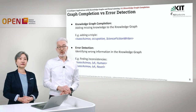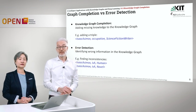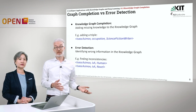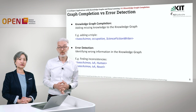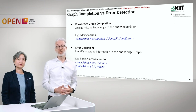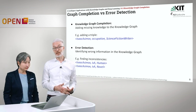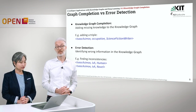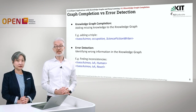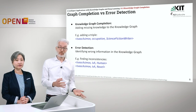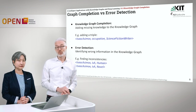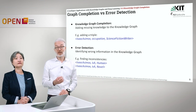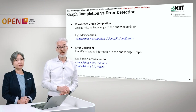We focus on knowledge graph completion. How does this differ from error detection? Knowledge graph completion is about adding missing knowledge to the knowledge graph — for example, adding an entire triple such as Isaac Asimov's occupation being science fiction writer. Error detection, on the other hand, is about identifying wrong information in the knowledge graph, for example finding inconsistencies.